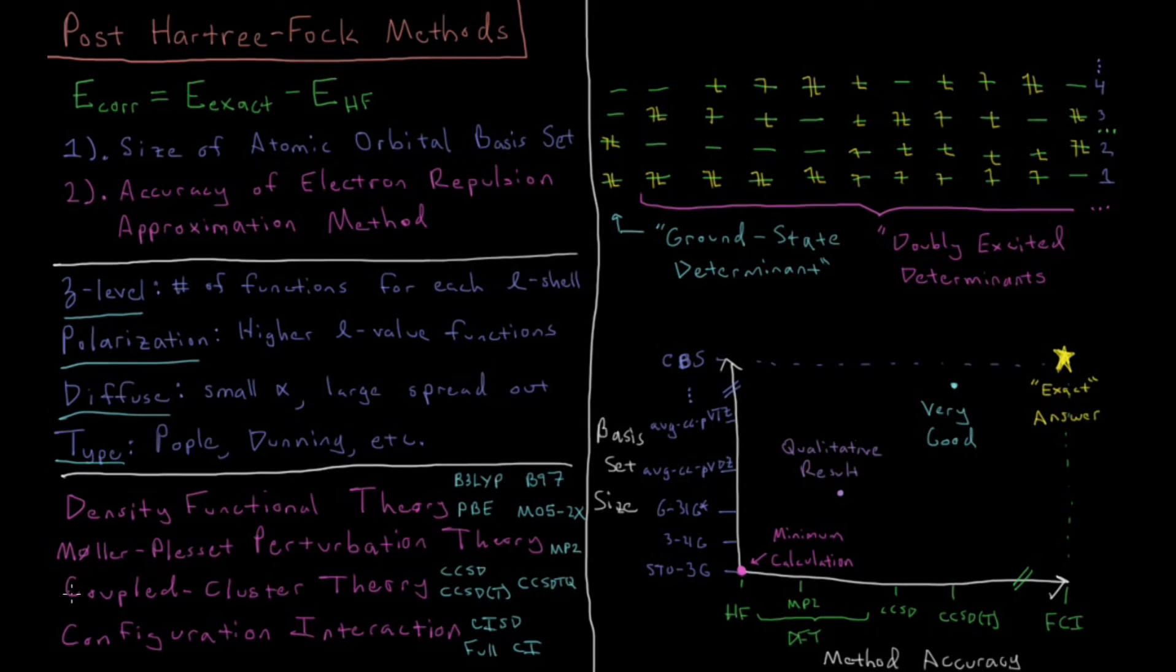One which is getting very advanced is coupled cluster theory, which is more sophisticated than MP2, has acronyms like CC singles, doubles - coupled cluster singles, doubles, triples, quadruples, however far you want to go. This includes a lot of products of these excitations here. Coupled cluster theory up through triples or perturbative triples, CCSD(T), is often called the gold standard of quantum chemistry because it often gives very good results which are very close to experiments for chemical properties when you use a large enough basis set.